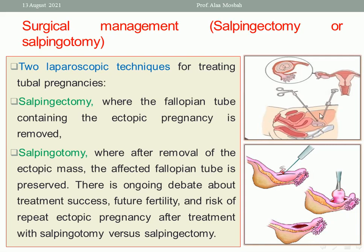The two surgical options are: salpingectomy — removing the whole tube with the ectopic inside — or salpingotomy — making an incision at the antimesentric border, removing the product of conception, controlling bleeding with hemostasis, and leaving it open (salpingotomy) or suturing with interrupted 7-0 Vicryl sutures in one or two layers (salpingorrhaphy).